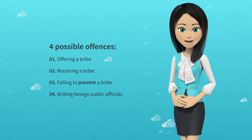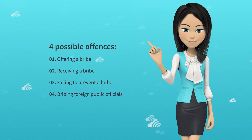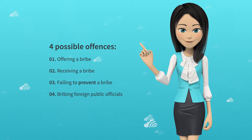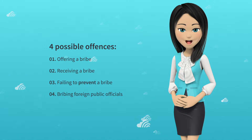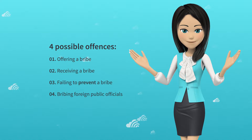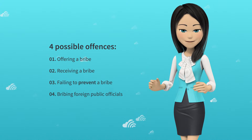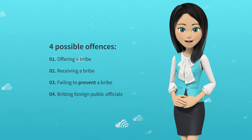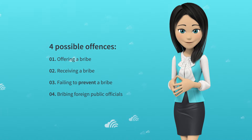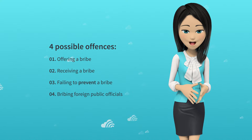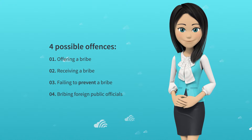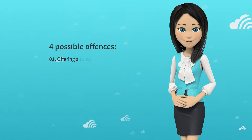The four offences are: giving a bribe; receiving a bribe; failing to prevent a bribe — this is the key offence relevant to Skyscanner, as a corporate body can be liable here; and finally, bribing foreign public officials. This may include grease payments or facilitation payments, but can include any payment made to a public official that is not made legitimately — for example, in order to speed up a process at customs.